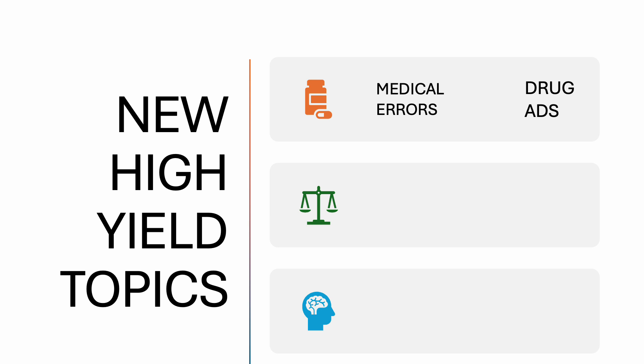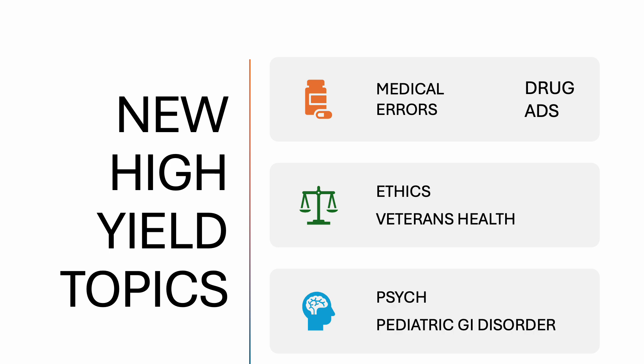Drug ads — I had like three drug ads questions on this test and each one had three sub-questions. So you need to really know how to answer that. I have a video on that; it's pretty easy once you get the hang of it. Ethics and veterans health — that was a lot more than I expected. And finally, I also want you to focus on psych and pediatric GI disorders.